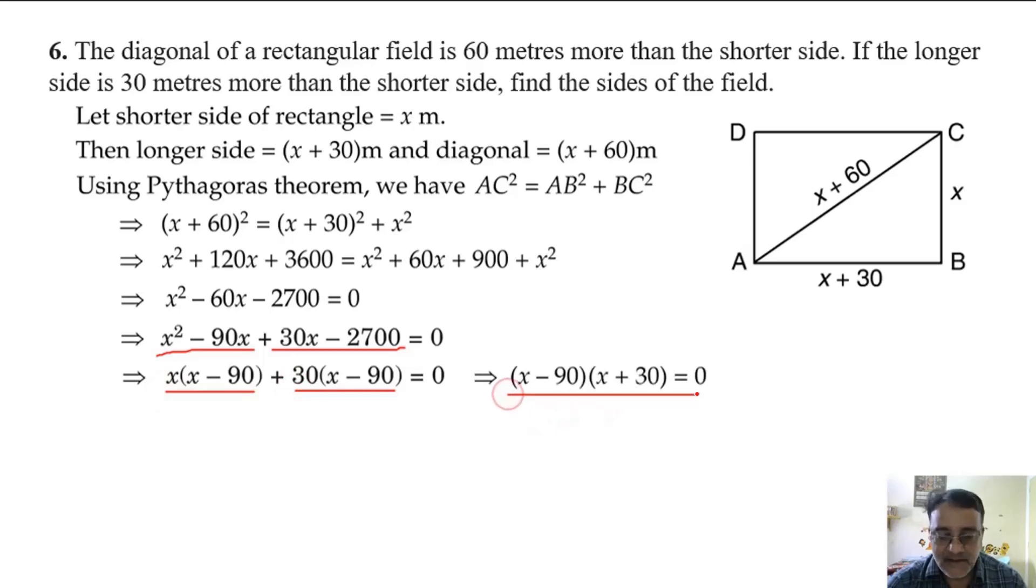We got two factors. So finally, what is the value of x? 90 and minus 30.